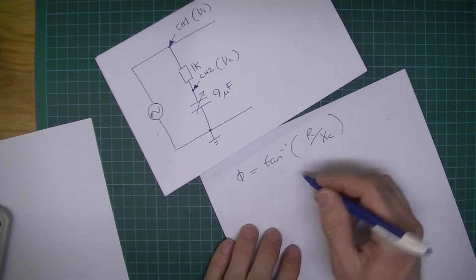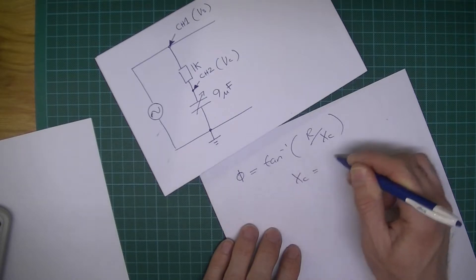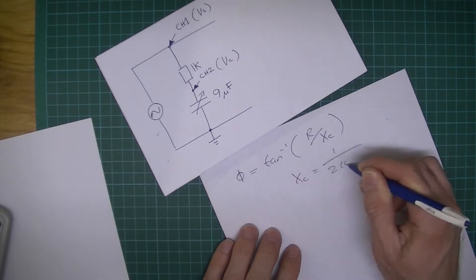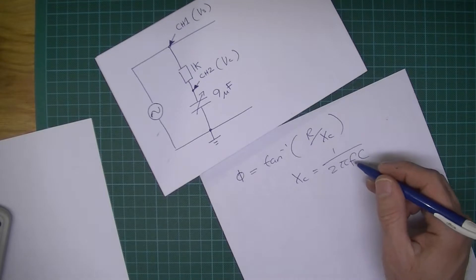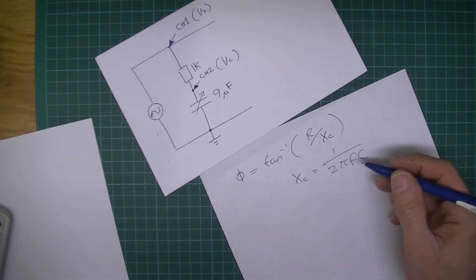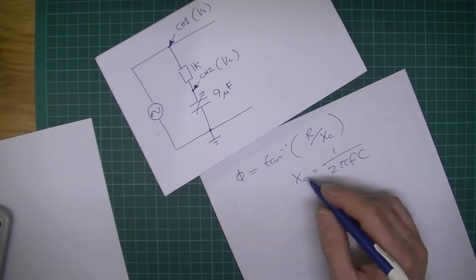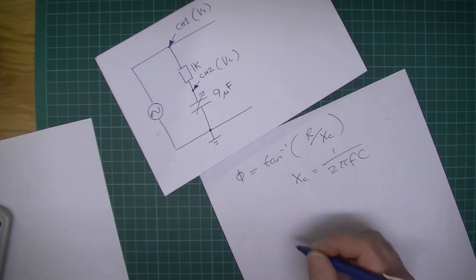Now just to remind you, the capacitive reactance is 1 over 2 pi fc. Frequency is line frequency, 50 Hertz. I just used a step-down transformer, so let's work out the phase angle.